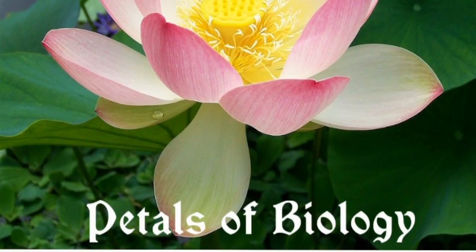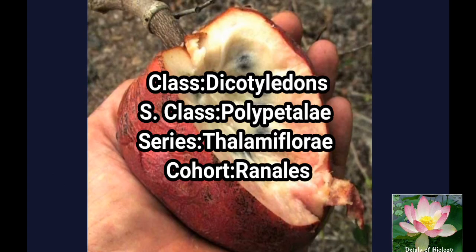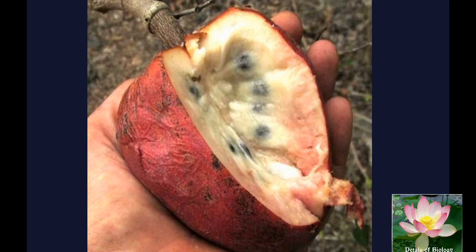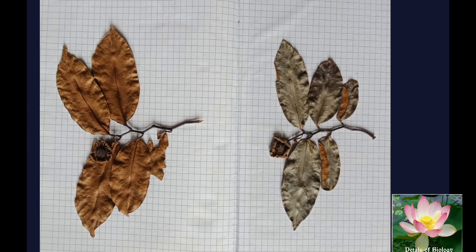Once again a warm welcome to Petals of Biology. In this video tutorial I would like to discuss with you the family Annonaceae. This is one of the primitive families of angiosperms with around 80 genera and 850 species. Most of the plants are distributed in the tropical regions of the world.